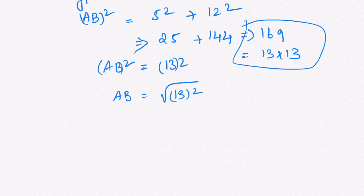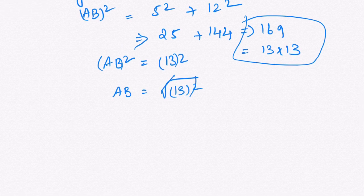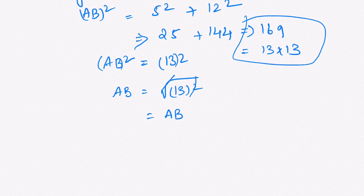From this we can write that AB squared equals 13 squared, so AB equals root 13. Root and square gets cancelled, so the hypotenuse AB is nothing but 13.